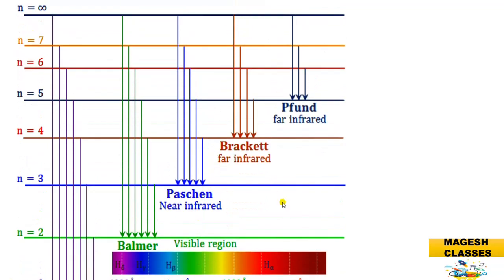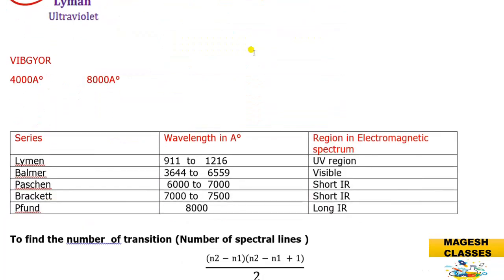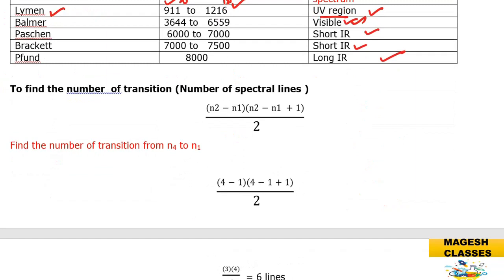Here is a pictorial representation of the various series. If the returning level is n=1, it is the Lyman series; n=2 is Balmer; n=3 is Paschen; n=4 is Brackett; n=5 is Pfund. The visible region is 4000–8000 Å. The Lyman series falls in the UV region (911–1216 Å). The Balmer series (3646–6563 Å) is in the visible region. Paschen, Brackett, and Pfund series fall in the infrared region.